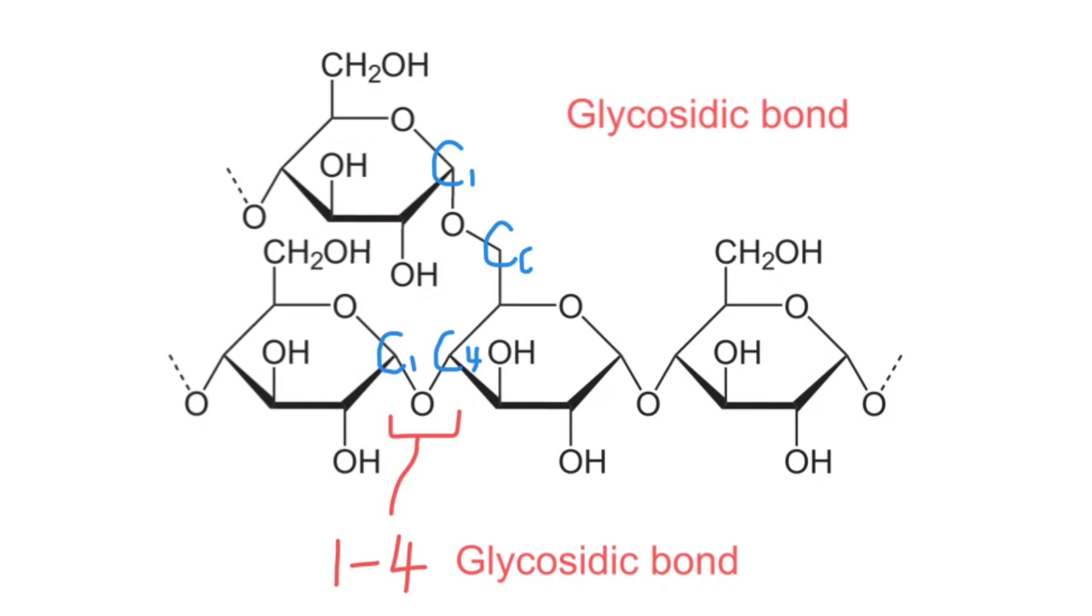The 1-6 glycosidic bond is between carbon number 1 and carbon number 6 in the glucose molecule as I've also illustrated.